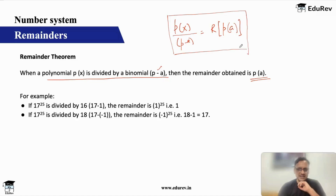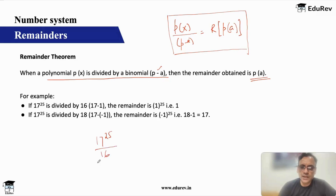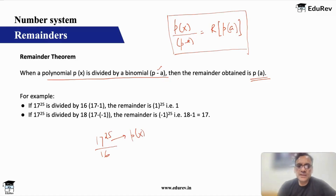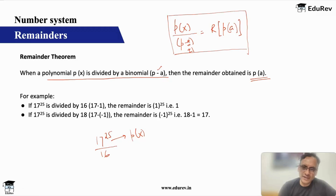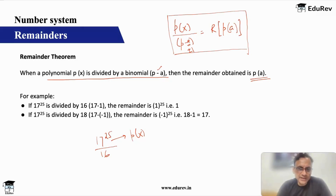Let me take a couple of examples to explain this. For example, 17 to the power 25 is divided by 16. Your polynomial is 17 raised to the power 25. Now, in this (p minus a) form, our attempt always is to get a equal to plus 1 or minus 1 — that is when it gets simplified and you get the answer straight away. So you always try to get a as 1. Here it is directly 1, as 17 to the power 25 upon (17 minus 1).